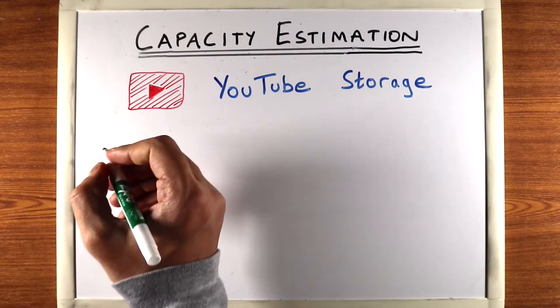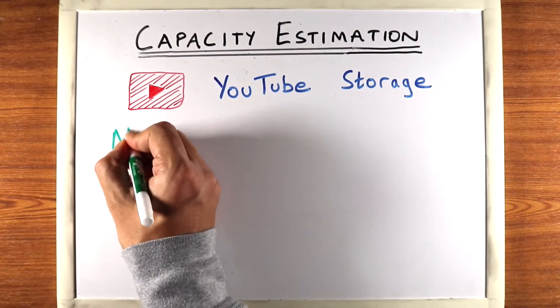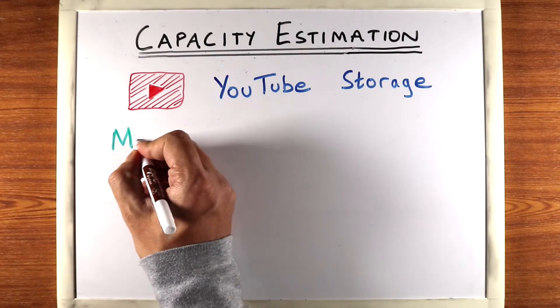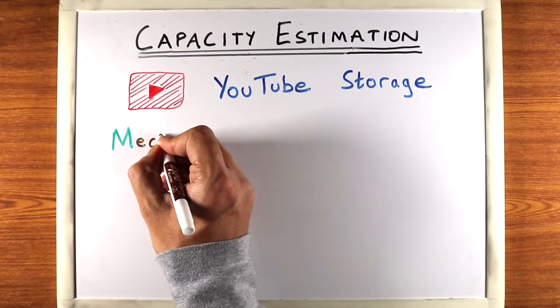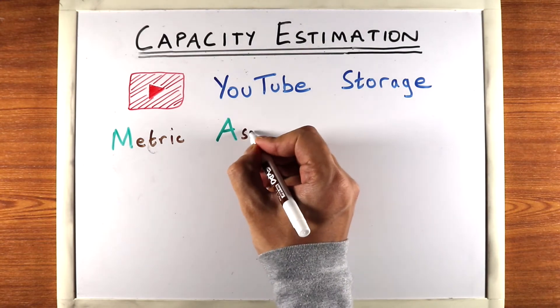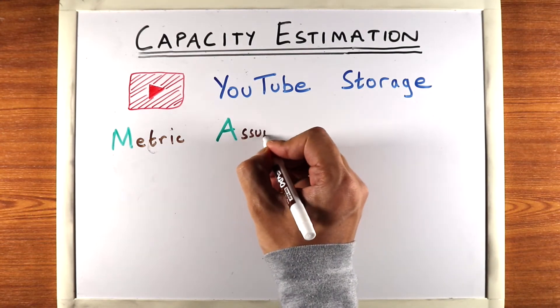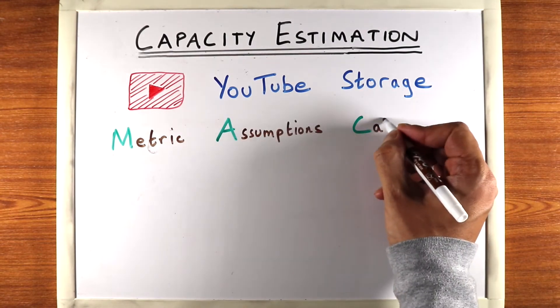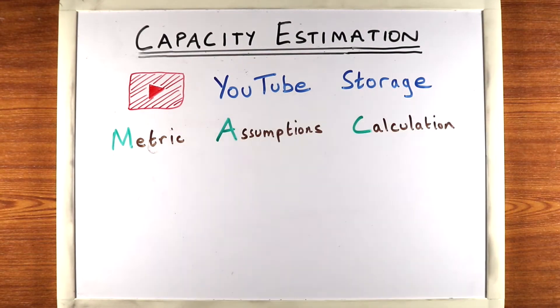We have a three-step approach for doing capacity estimation. The first step is defining your metric. The second step is defining assumptions in your system. And the third step is doing the calculation.